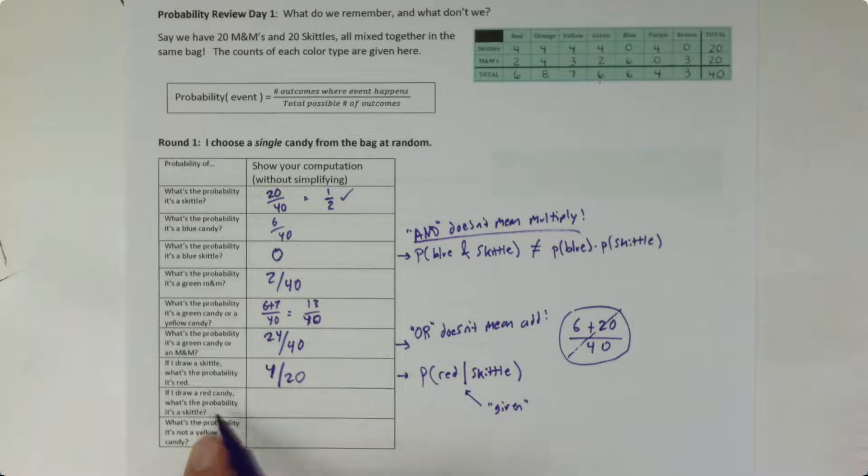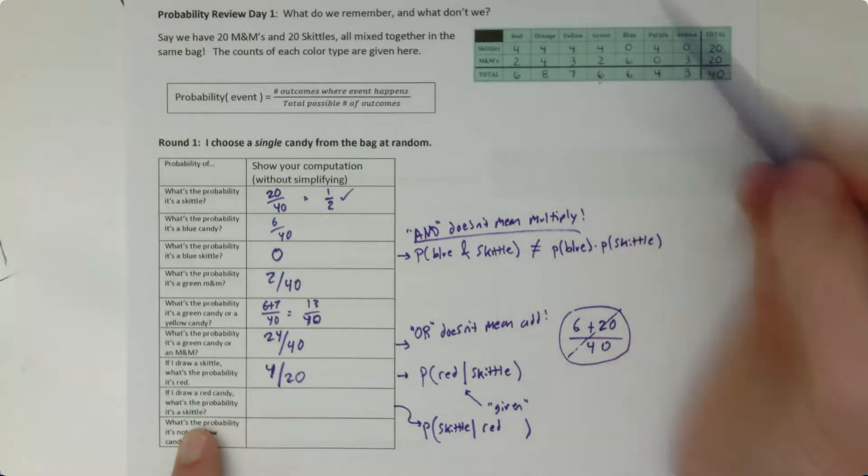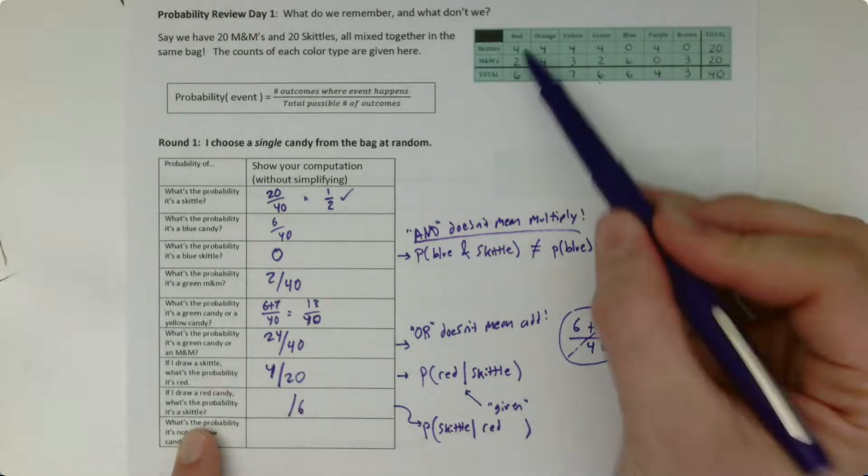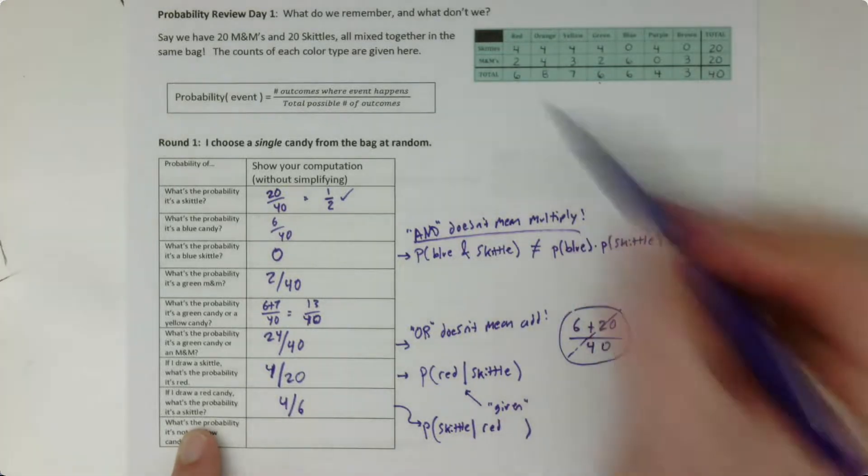So go ahead and try that same notation here. If I draw a red candy, what's the probability it's a Skittle? So go ahead and write that out using this vertical bar notation. What's given and what's the thing we're trying to find the probability of? So here it's the other way around. If I draw a red candy, that's given, and I want to know the probability of it being a Skittle, given that it is red. So here the total pool of candies I'm drawing from are the red ones, because I already knew it was red. And the question is, what's the probability of it being a Skittle if I know it was already red? And the answer is 4 out of 6.